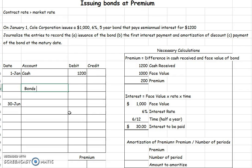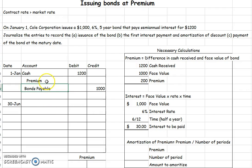We're going to repay this bond for the face value, which is $1,000. The difference between what we got and what we have to repay is our premium. A debit balance is for discounts, and now you'll see that a premium has a credit balance. So I need a credit to balance this journal entry, which also confirms it's a premium. There are lots of different ways to see that this is a premium.